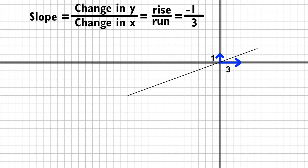You'll notice the opposite bank of the pond has a negative slope. Negative one-third, rise negative one, run three.